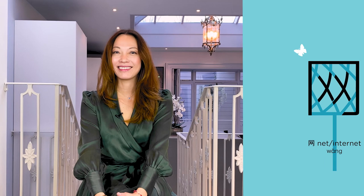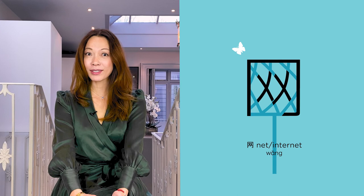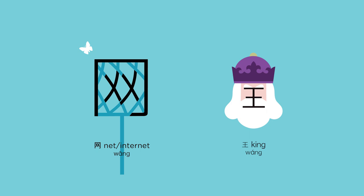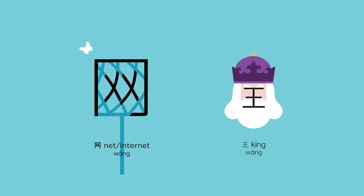Alright, the first important character to learn is the internet. We say 网 — this character sounds like the surname Wang, or the king. But did you hear the difference? The net, the internet, we say 网 is a third tone, and the king or the surname is a second tone. 网.